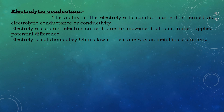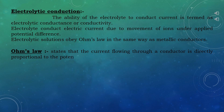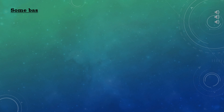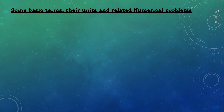Let's revise Ohm's law. It states that the current flowing through a conductor is directly proportional to the potential difference across it — that is, V is proportional to I, or V equals IR, or R equals V upon I — where V is the potential difference, R is the resistance of the solution, and I is the current flowing. Let's study some basic terms, their units, and related numerical problems, as this topic is very important for your final examination.